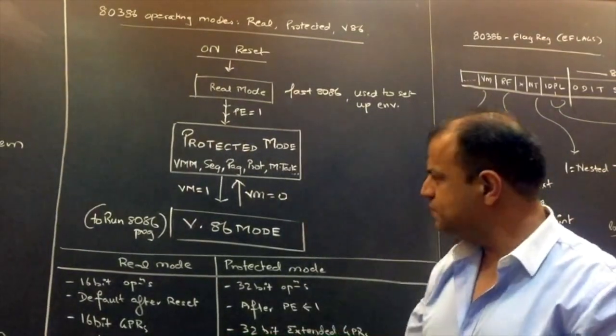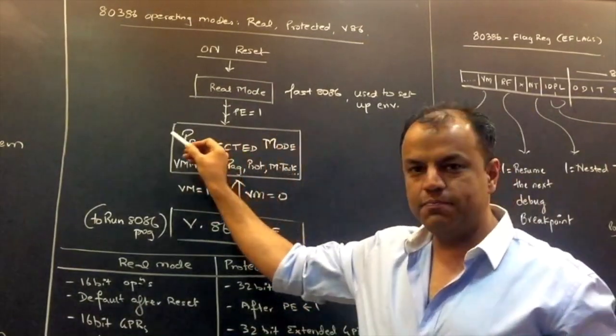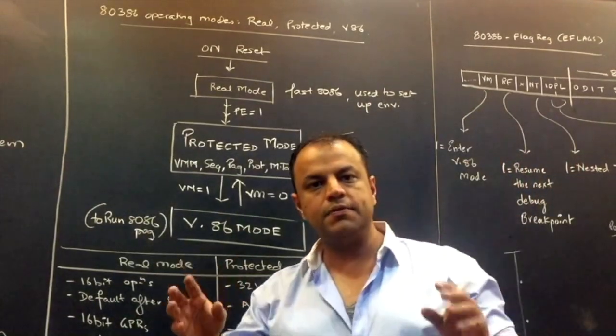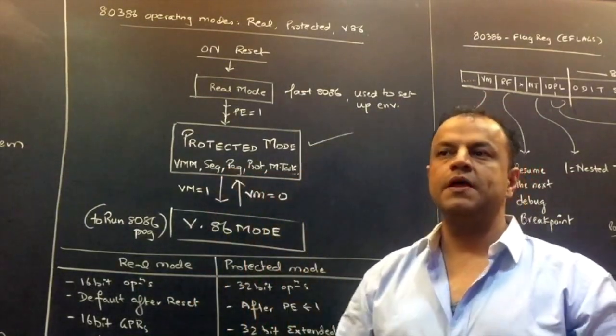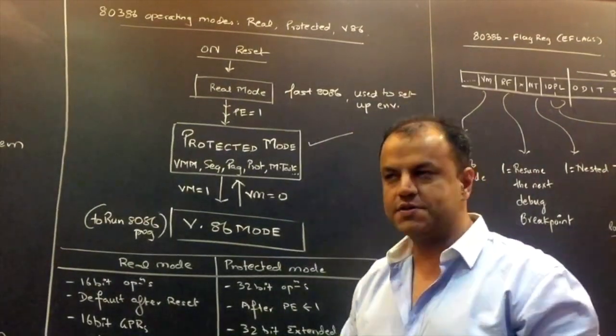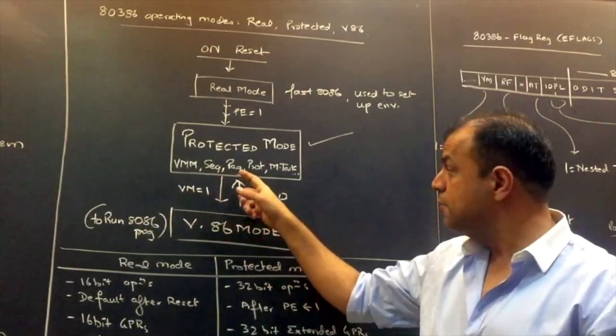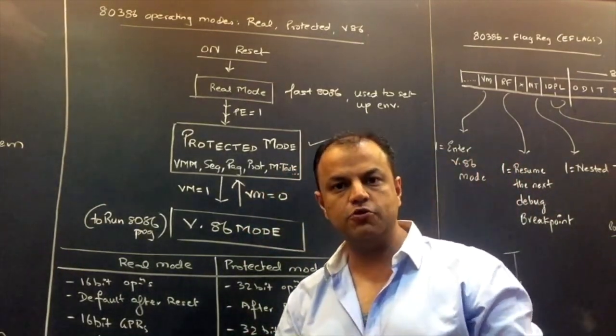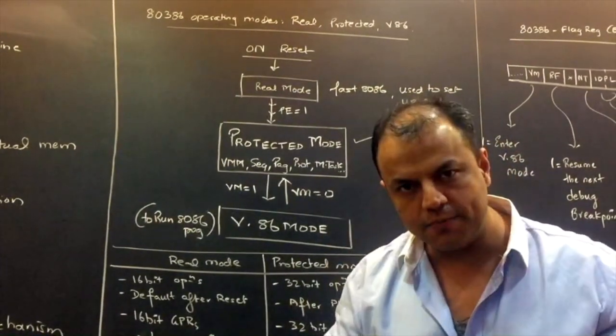So why do you need them? The actual working of 386 is in protected mode. This is the main mode. 99% of a lifetime that a 386 will spend will be in protected mode. If you have seen my previous video where I have given introduction to 386 and given its salient features, I had mentioned virtual memory management, segmentation, paging, protection, multitasking, 32-bit registers, 32-bit operations, etc. All this happens only in protected mode.